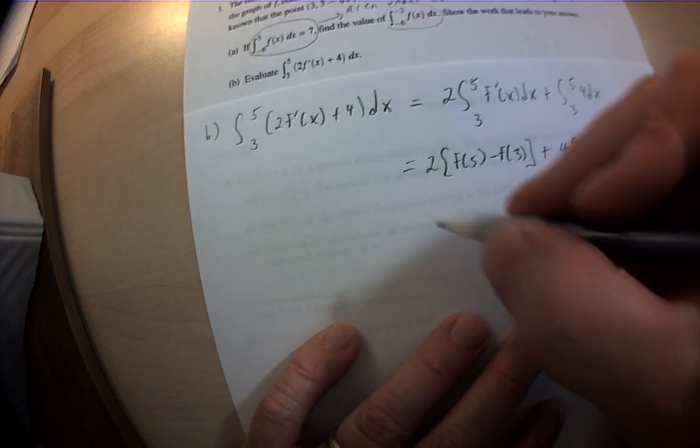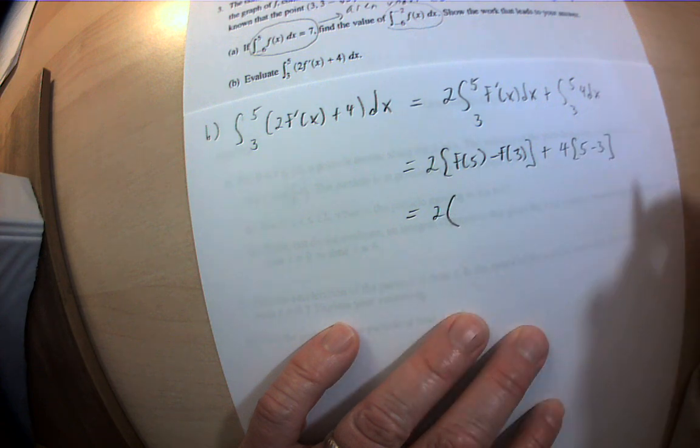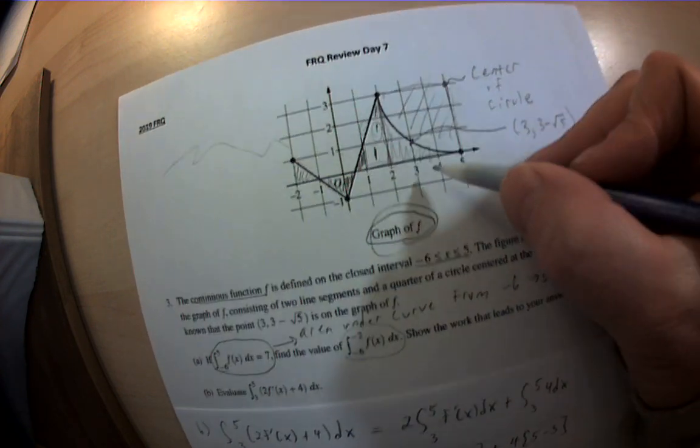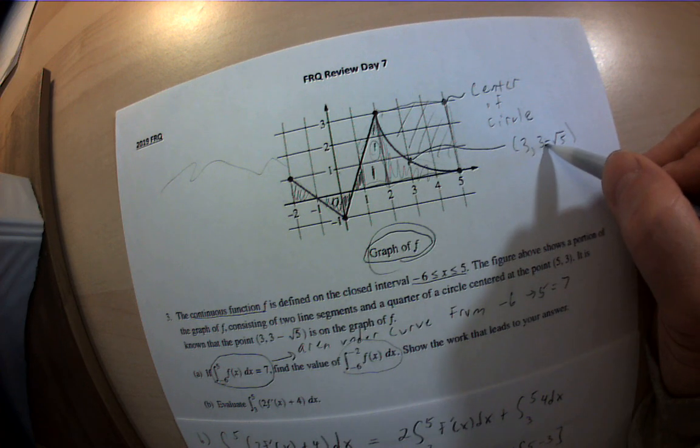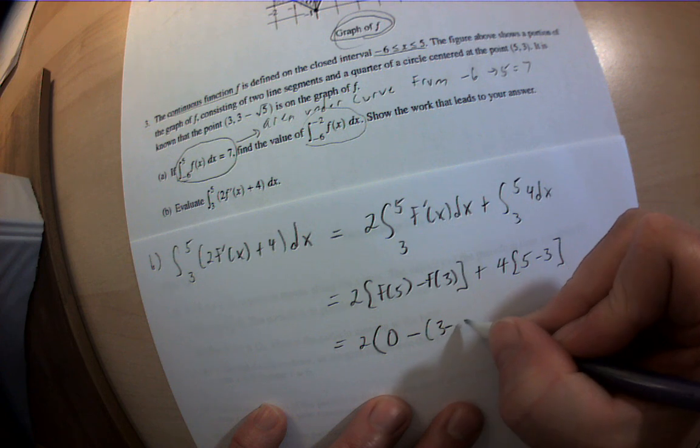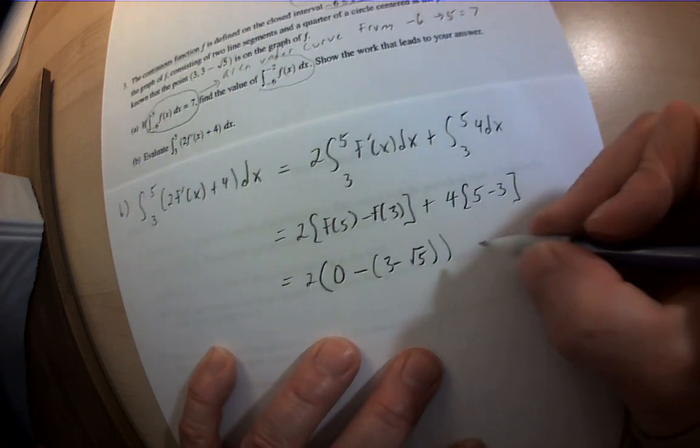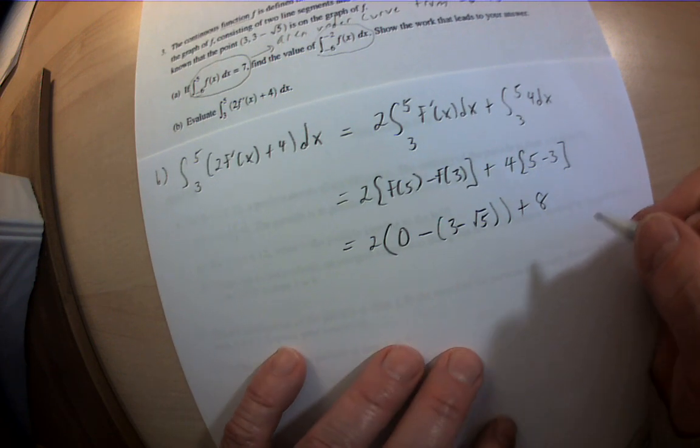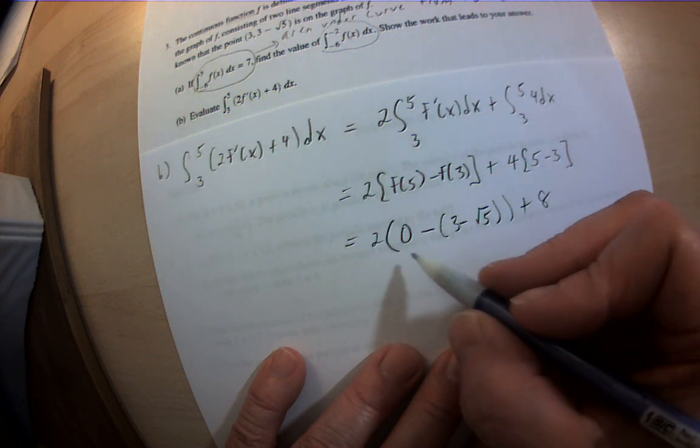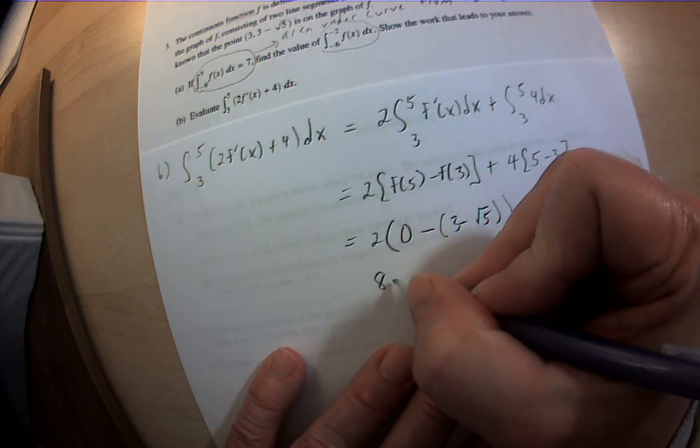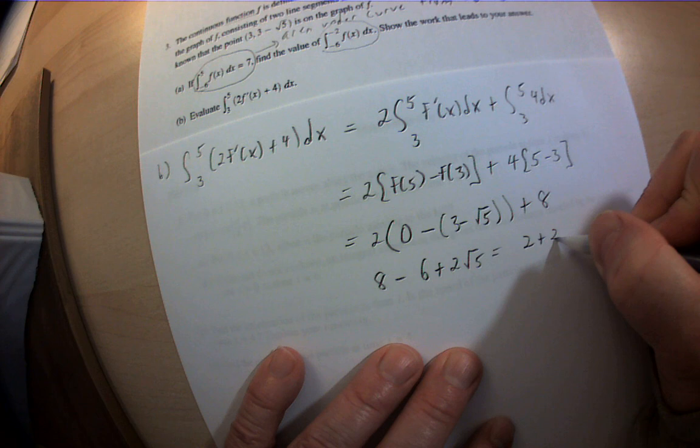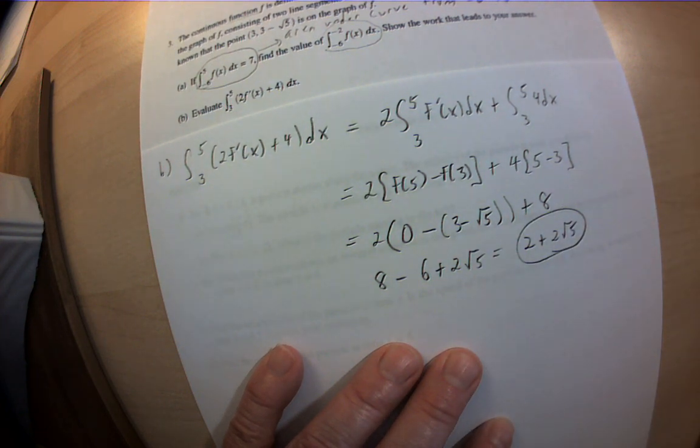So I need f(5). If I look up here, this is a graph of f. That's f(5). f(5) is 0. f(5) minus f(3). That's a weird point, but they gave it to me. Minus (3 minus root 5), plus 5 minus 3 is 2, 2 times 4 is 8. So if I combine like terms, I get 8 minus 6 plus 2 root 5. So I get 2 plus 2 root 5. That should be the answer. And it is.